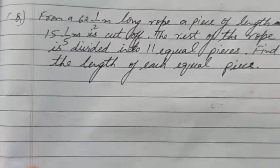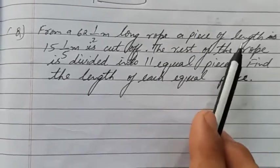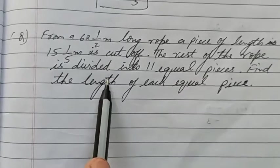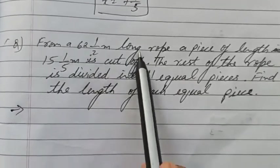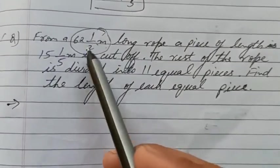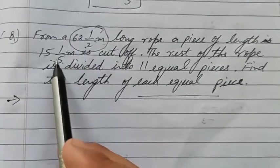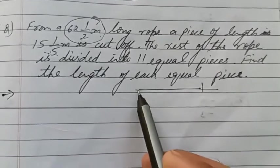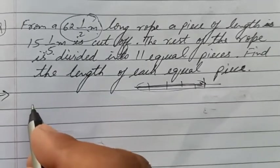Now come to the next one. From a 62½ meter long rope, a piece of length is cut off. The rest of the rope is divided into 11 equal parts. Find the length of each part. From a rope of this much length, this much is removed - it's cut off. First find out the remaining part, then you have to divide this remaining with 11.